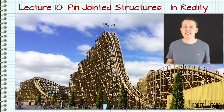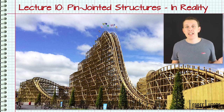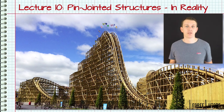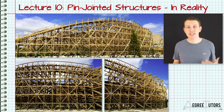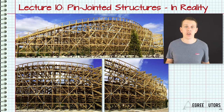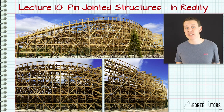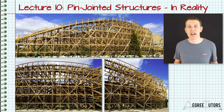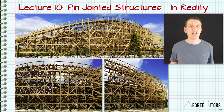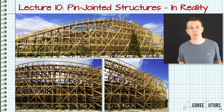I came across a great example of a pin jointed structure on a recent trip back home. Tayto Park in Ireland is home to Europe's largest timber roller coaster, Cú Chulainn. This structure relies extensively on truss action for its stability. Thousands and thousands of timber elements are joined together at joints whose behaviour is very similar to the pin joints we've been discussing, allowing the timber elements to carry axial load only — either tension or compression — and avoid bending, which wouldn't be an optimal use of the timber strength.